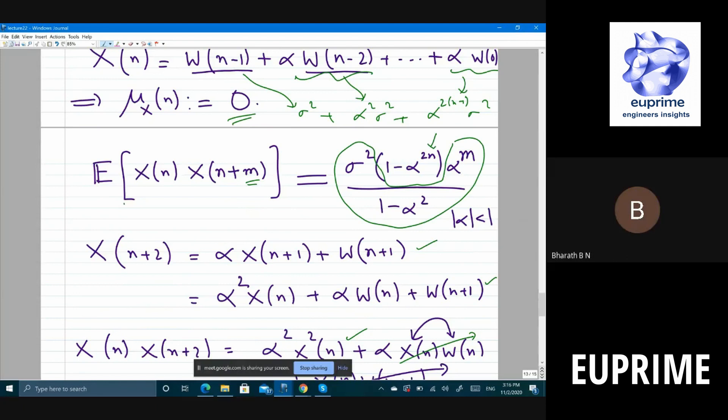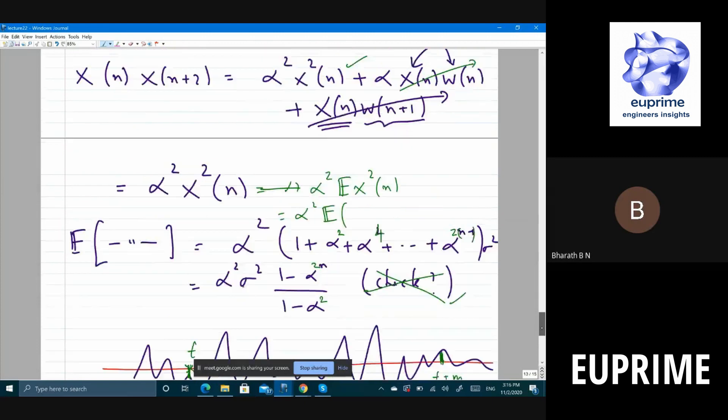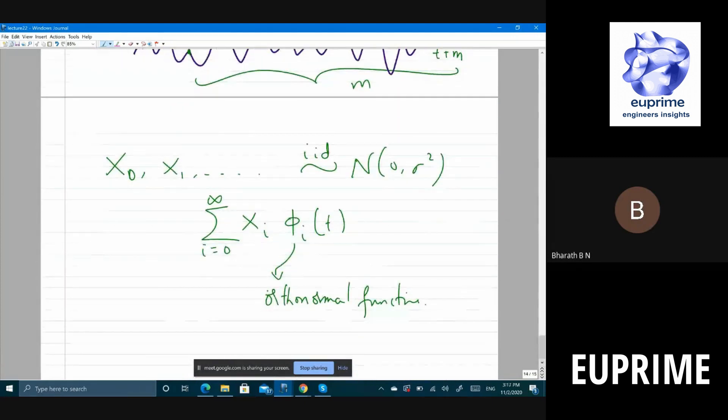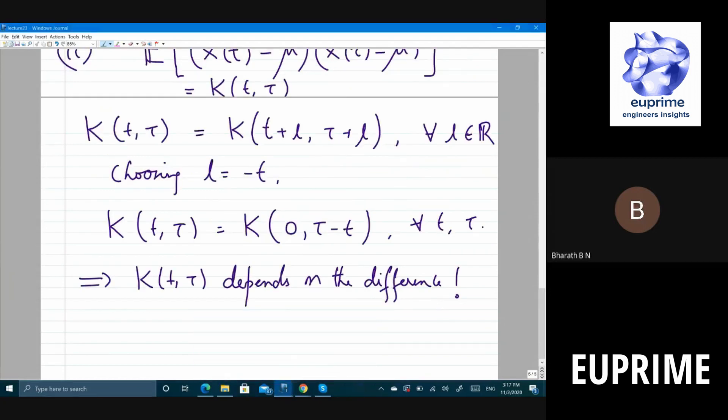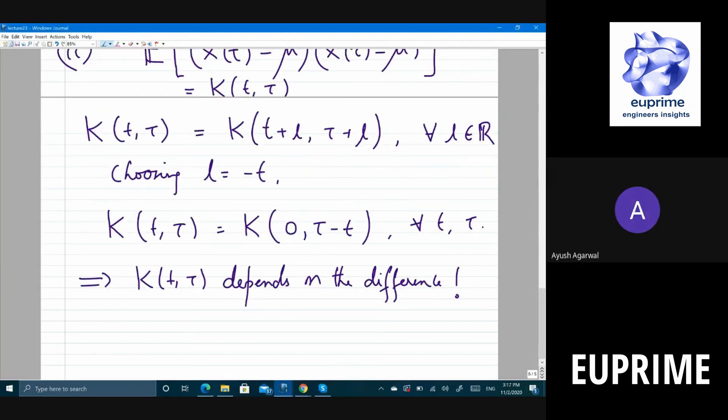Yes, right. So this is one example where things are stationary. This is an example of a stationary process. We will look at more examples later on of stationary process. Is that okay? Yes, yes sir. Okay, yeah, sir, thank you.